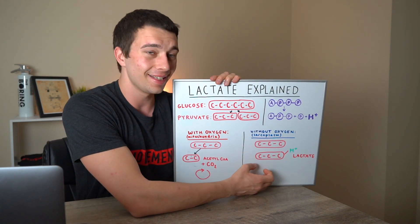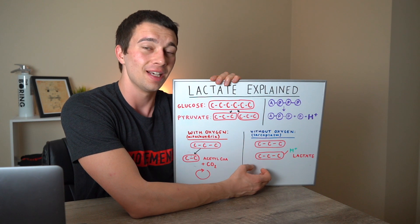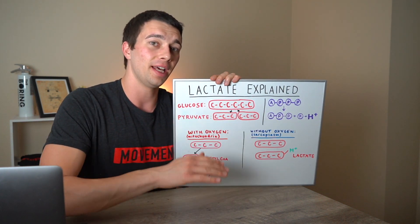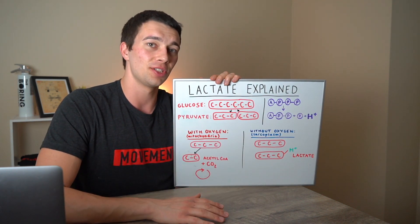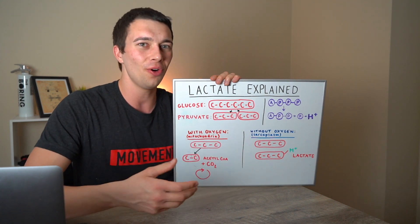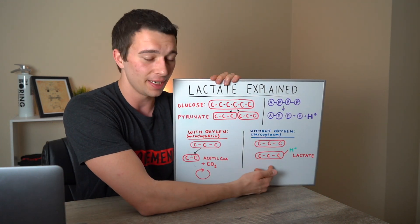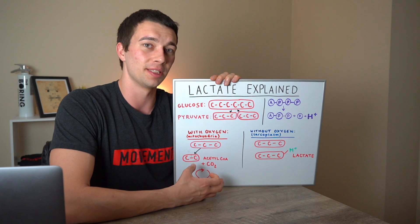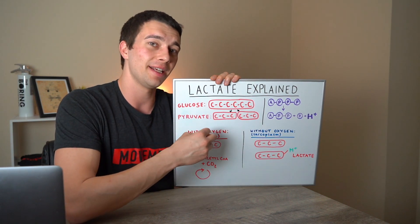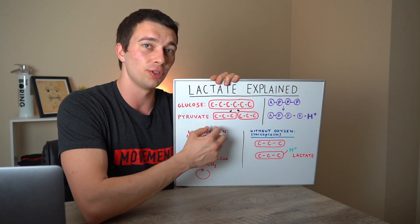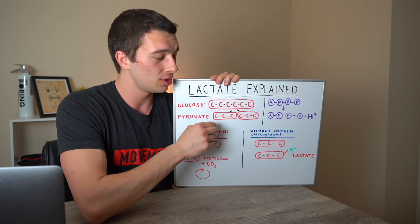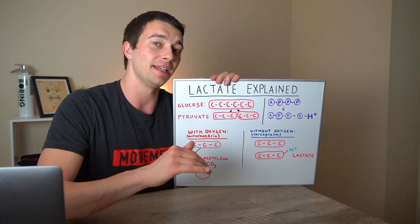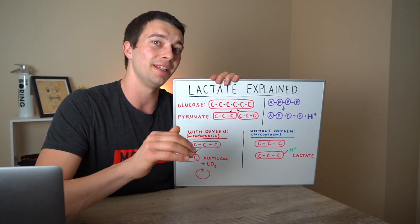This occurs at high-intensity exercise, but it's important to know it actually always occurs to some extent, even at low intensity. Even at rest, I'm producing some amount of lactate and doing some aerobic metabolism. It's just that at high-intensity exercise, the percentage of pyruvate going to the anaerobic pathway increases, and that's when we see lactate concentration increase.